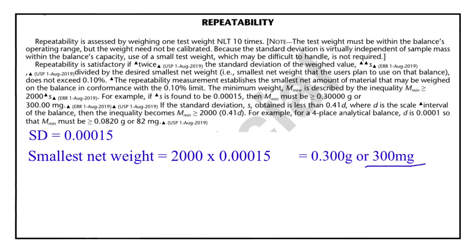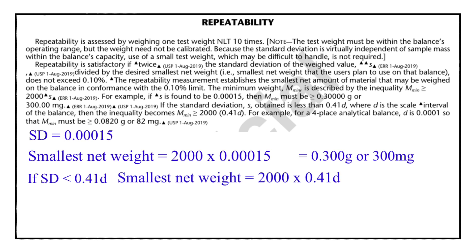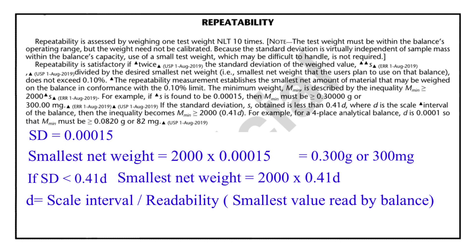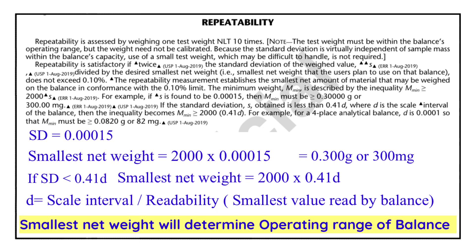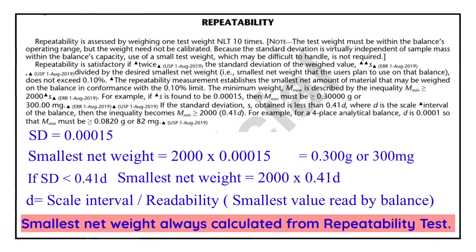We should always remember one important point: if in case the standard deviation is less than 0.41d, then to calculate the smallest net weight the formula becomes: smallest net weight = 2000 × 0.41d. Here, d is called the scale interval or the readability — it means the smallest value that is indicated or displayed by the balance. The significance of smallest net weight is that it determines the operating range of your balance. If the smallest net weight is 300 milligram, you cannot take any weight below 300 milligram. Smallest net weight is always calculated from the repeatability test.